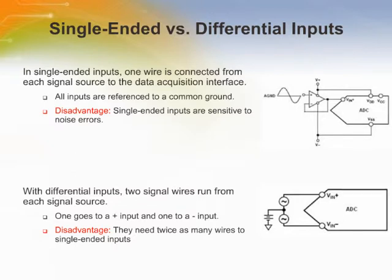Many of today's instrumentation and process control applications rely on microcontrollers to process real-world analog signals. Sensors convert a natural parameter, such as temperature or pressure, into a voltage or current. Analog-to-digital converters then convert the signal into a digital form. With single-ended inputs, one wire is connected from each signal source to the data acquisition interface, and the measurement is the difference between the signal and ground. Although single-ended inputs are generally sufficient for most applications, they are sensitive to noise errors.